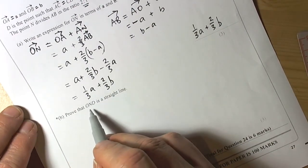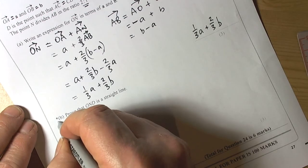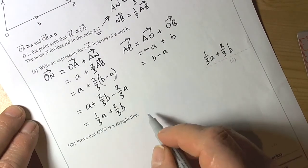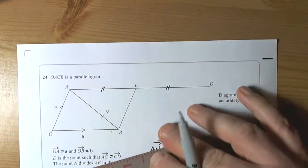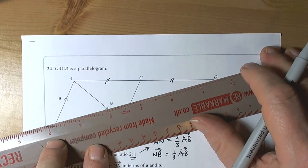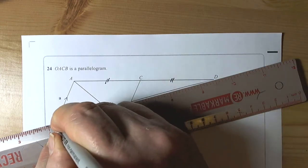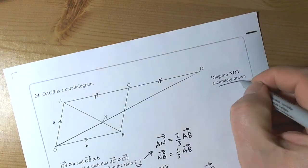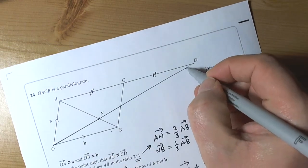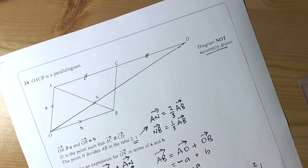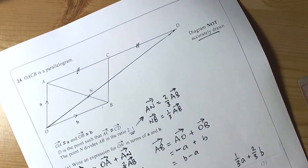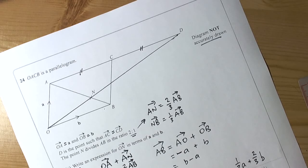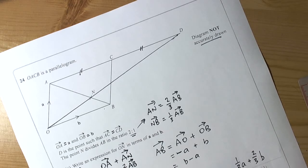We're then asked to prove that O, N, and D is a straight line. Again, it's an explain question. So O, N, and D, we're trying to prove that they are in a straight line.